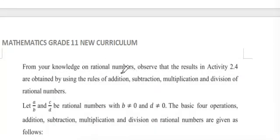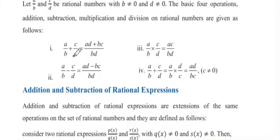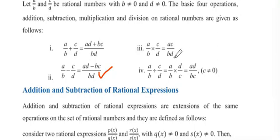From your knowledge of rational numbers, observe that the results in Activity 2.4 are obtained using the rules of addition, subtraction, multiplication, and division. Let A over B and C over D be rational numbers with B and D not equal to zero. The four basic operations are: A/B + C/D = (AD + BC) / BD; A/B − C/D = (AD − BC) / BD; A/B × C/D = AC / BD; A/B ÷ C/D = (A/B) × (D/C) = AD / BC, where C ≠ 0.